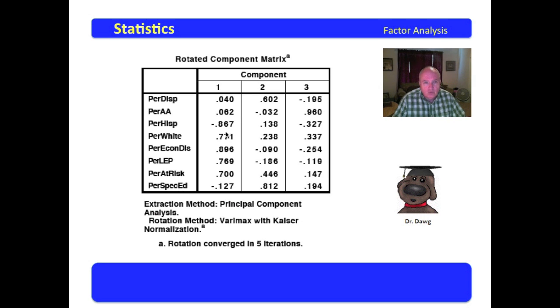In this first one, we note that the largest players are economically disadvantaged, Hispanic, limited English proficiency, and at risk, and then white. When we examine the data set, we notice that factor one might be called ethnicity, because we have Hispanic and white having a lot of impact upon economically disadvantaged, limited English proficiency, and at risk.